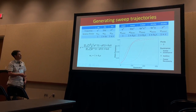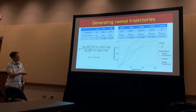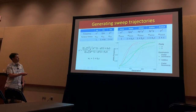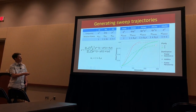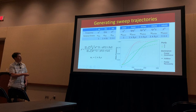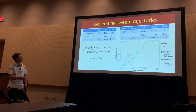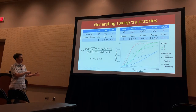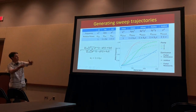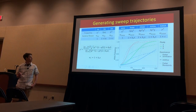Here are the results for a tetraploid — increasing fixation times as we would expect. Keep your eye on the different dominance coefficients, because that's going to become important later. And here is the octoploid, again stretching way further out with much longer fixation times.